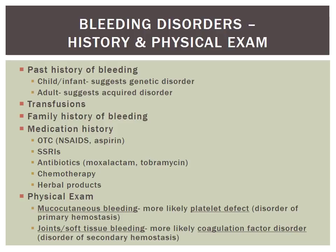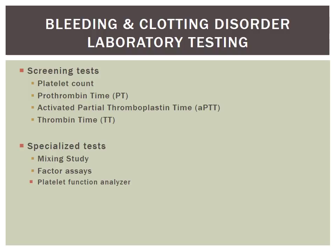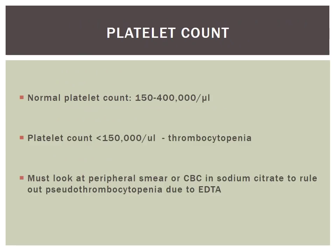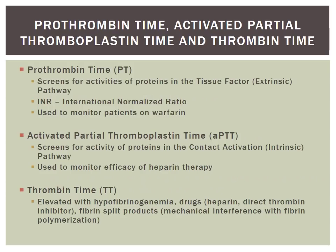Laboratory testing for bleeding and clotting disorders includes a platelet count, prothrombin time (PT), activated partial thromboplastin time (APTT), thrombin time (TT), and specialized studies including mixing studies, factor assays, and platelet function analyzer. A normal platelet count is between 150 and 400 per microliter. A platelet count less than 150 is thrombocytopenia. It is important to rule out pseudothrombocytopenia by getting a peripheral smear or using a sodium citrate tube, as EDTA in normal CBC purple tubes can cause a false low count.